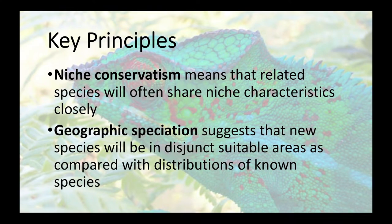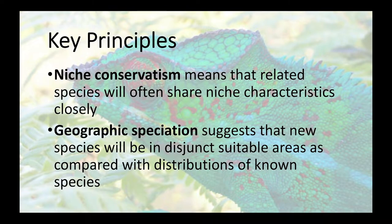We need there to be an overall pattern of ecological niche conservatism such that related species and populations will share niche characteristics. These methods will also be most effective when speciation takes place in geographic dimensions, because that means the new species will be in suitable areas that are disjunct from the ranges of known species. These are two key principles, and if they don't hold, we don't have much hope of using these methods very effectively.